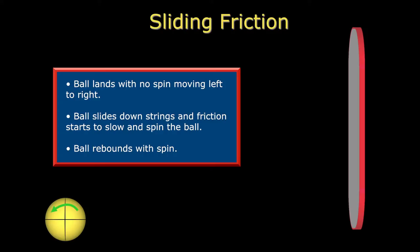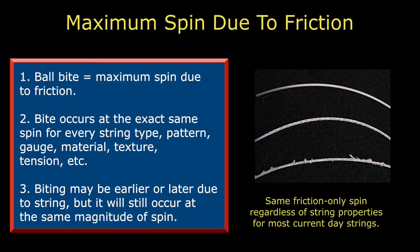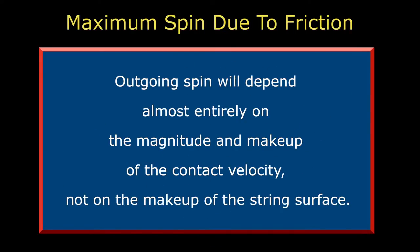And the same thing happens when the ball hits the racket. The ball initially slides across the strings, while friction acts to decrease its speed and change its spin. Then the ball bites, and friction stops. When the ball bites, maximum spin has been achieved, and for any given impact, this will occur at the exact same spin for every string type, pattern, gauge, material, texture, etc. It may occur earlier or later in the impact, depending on the string, but it will occur at the exact same spin. In fact, if biting occurs earlier, friction may actually reverse direction and reduce the spin already achieved. For the friction only phase of the impact, the outgoing spin will depend almost entirely on the magnitude and makeup of the contact velocity, not on the makeup of the string surface. So that being said, let's look more closely at this important parameter of contact velocity.